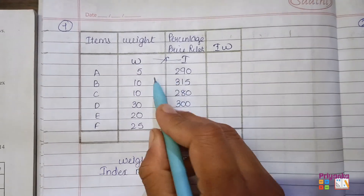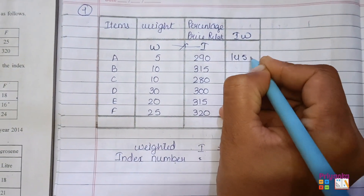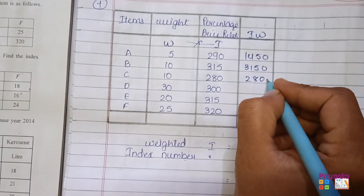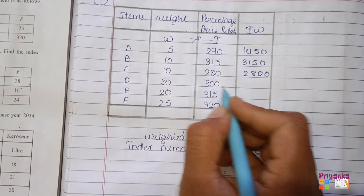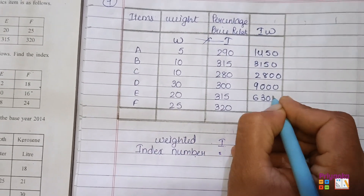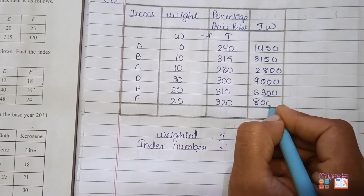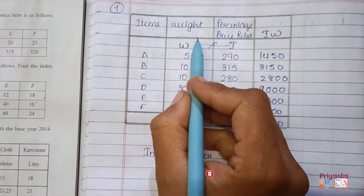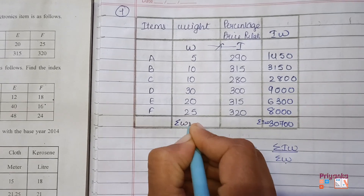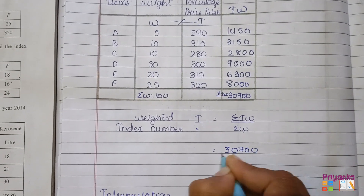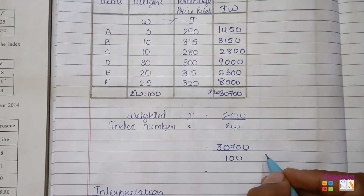iW means the multiplication of the two columns i and W. Let's start the calculation: 5 × 290 = 1450; 10 × 315 = 3150; 10 × 280 = 2800; 30 × 300 = 9000; 25 × 320 = 8000. The total of the iW column gives σiW = 30700, and the total of W gives σW = 100.